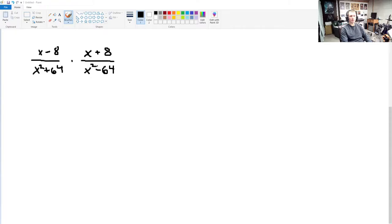So, here's the problem that was asked. It was simplify this product, which is x minus 8 over x squared plus 64 times x plus 8 divided by x squared minus 64.